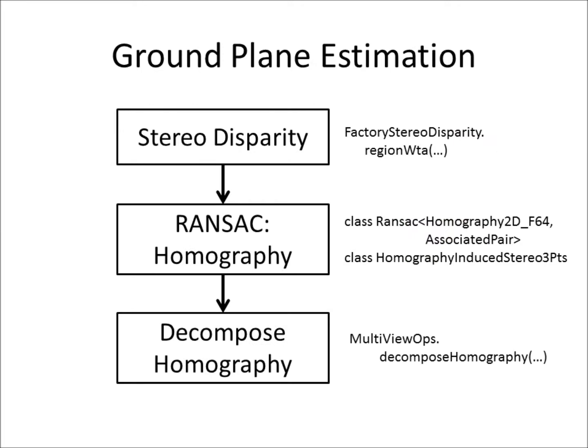The ground plane was estimated in three stages. First, compute the dense stereo disparity between the left and right eyes to find point correspondences. RANSAC was then used to robustly compute the induced homography. Then the found homography was decomposed to extract the plane's equation. On the right, functions or classes which were used by BOOF-CV are shown.